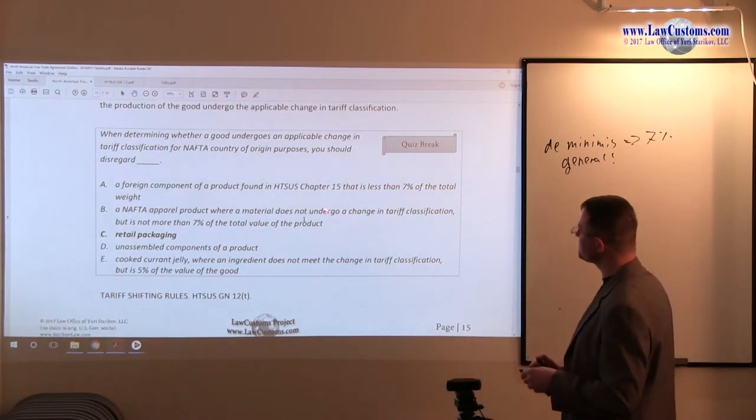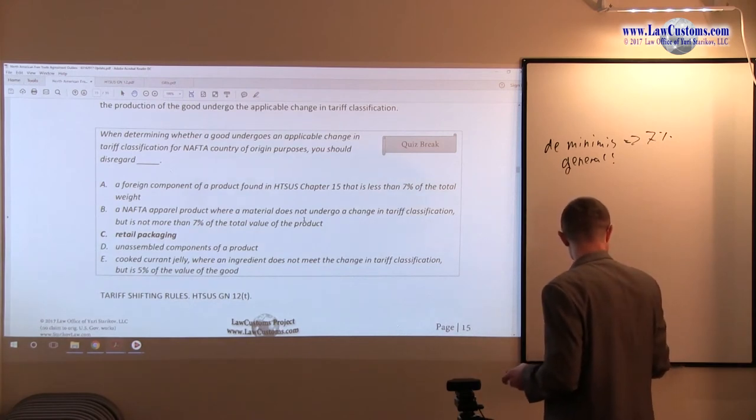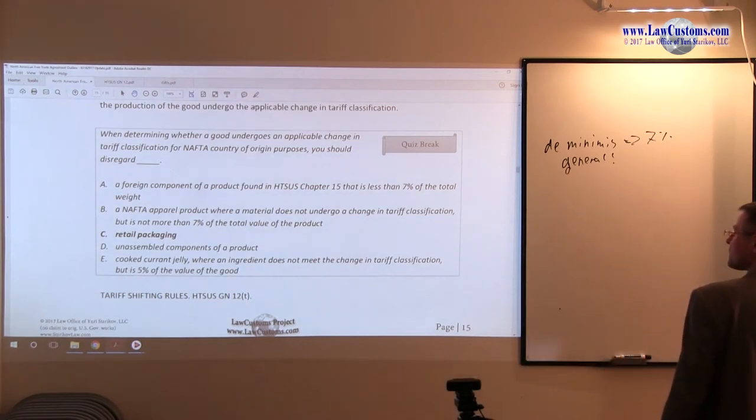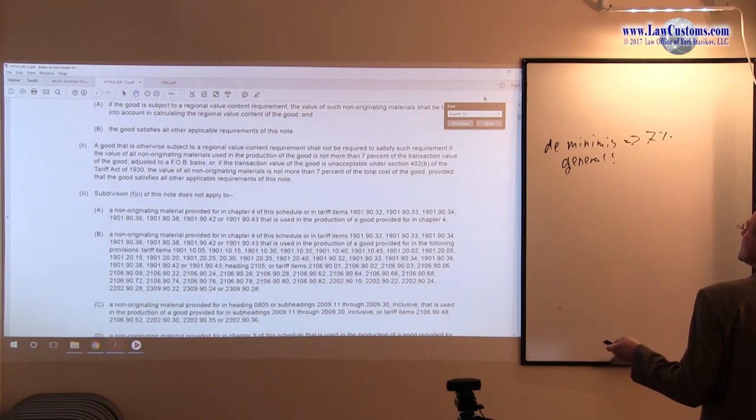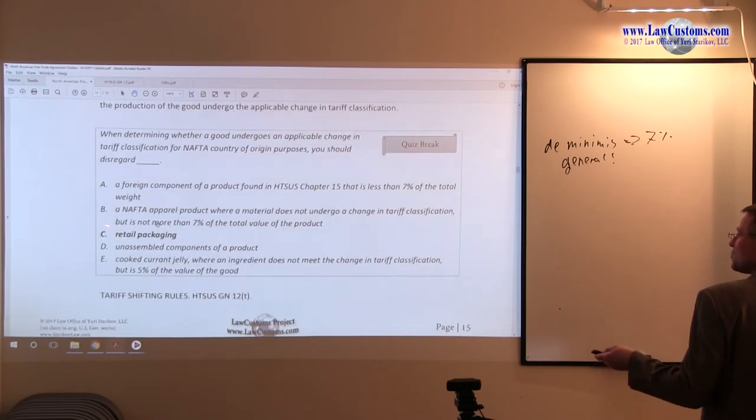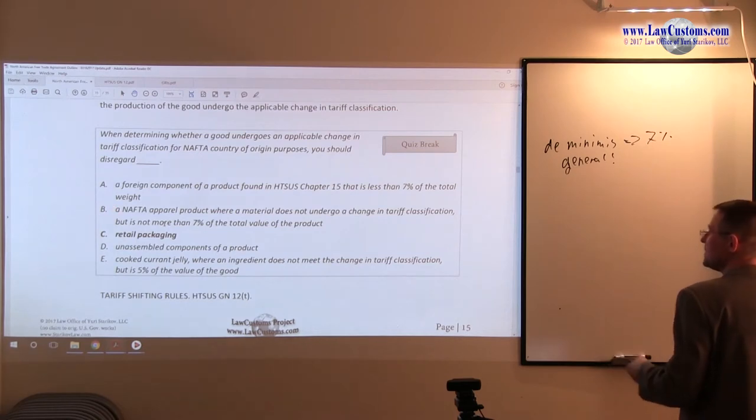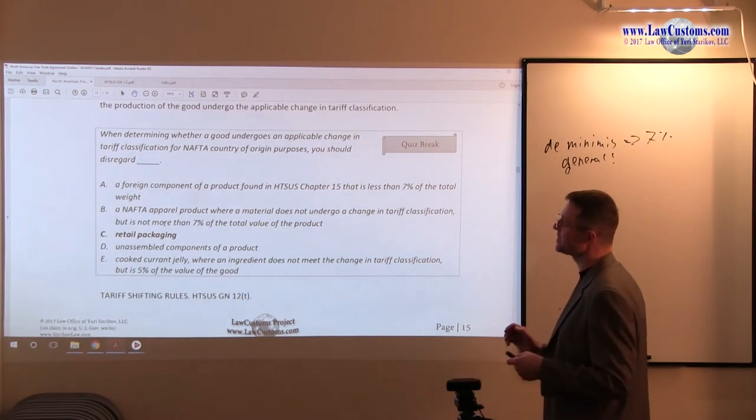Now chapter 15, generally speaking, if it is less than 7%, you are good. But what about chapter 15 stuff? Well, take a look at the exceptions over here. You have a non-originating material provided for section 15 of the tariff schedule, it does not apply to the general rule. So you can't use that as an argument. Therefore, chapter 15, there is no 7% rule de minimis. So this makes A an incorrect answer.